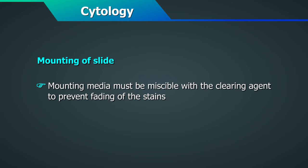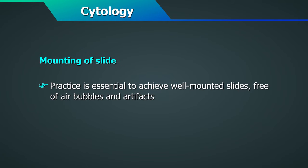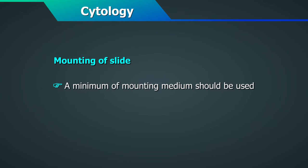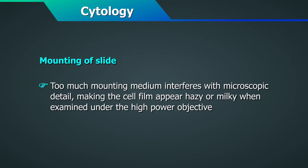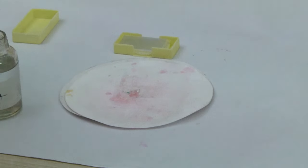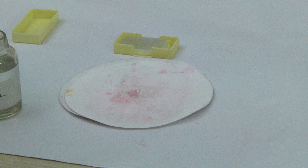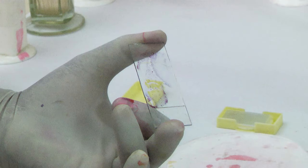Mounting of slide: the mounting media must be miscible with the clearing agent to prevent fading of the stains. Practice is essential to achieve well-mounted slides free of air bubbles and artefacts. A minimum of mounting medium should be used, as too much interferes with microscopic detail, making the cell film appear hazy or milky under high power. The usual size of the cover slip for a cervical smear is 22 by 30 mm. If the smear spread is beyond the cover slip area, ideally use another small cover slip or put a drop of DPX and spread evenly with the same cover slip without affecting the focus.